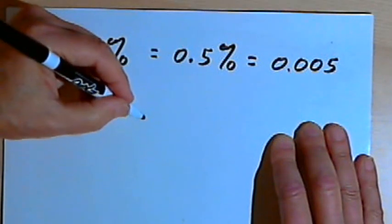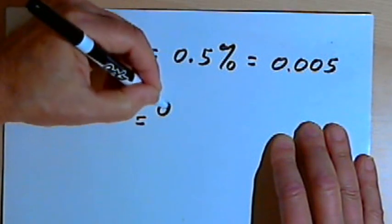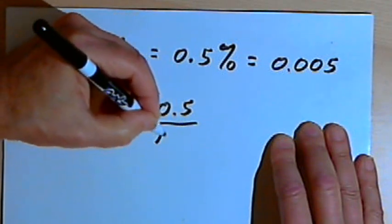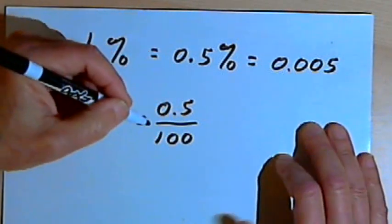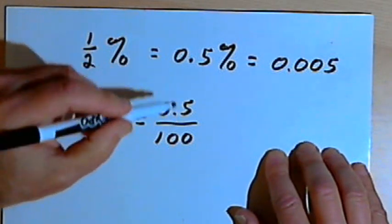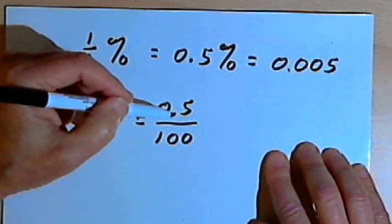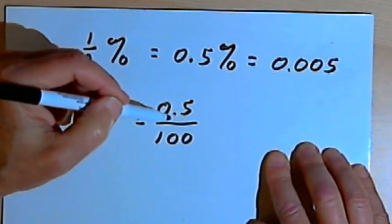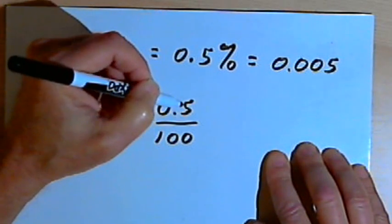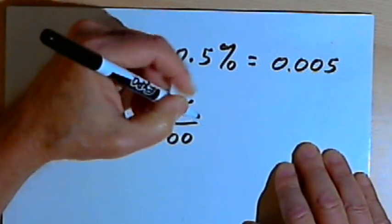If I want to turn that into a fraction, I'll take that 0.5, put it over 100. Once again, I've got a decimal in the numerator. I don't want to have a decimal as part of my fraction. I could multiply this by 10 over 10, or if I wanted to, I could just multiply it by 2 over 2.